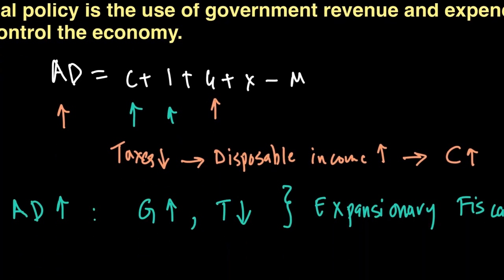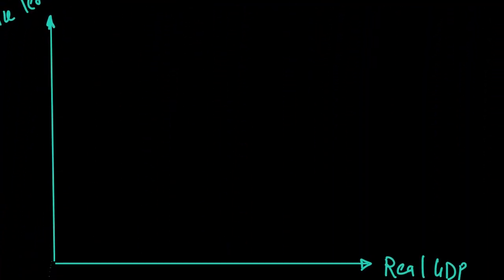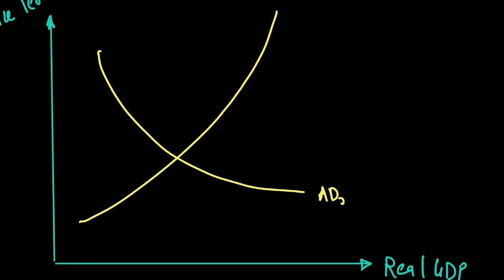Let's see expansionary fiscal policy in terms of a diagram. If our aggregate demand is currently AD0 and aggregate supply is AS0, we are looking at our price level to be P0 where real GDP is Y0. Now, increasing government expenditure or reducing taxes can cause consumption to go up because disposable income is going up, investment to go up because now firms are taxed less, and G also goes up. So that in turn may cause AD curve to shift to the right.